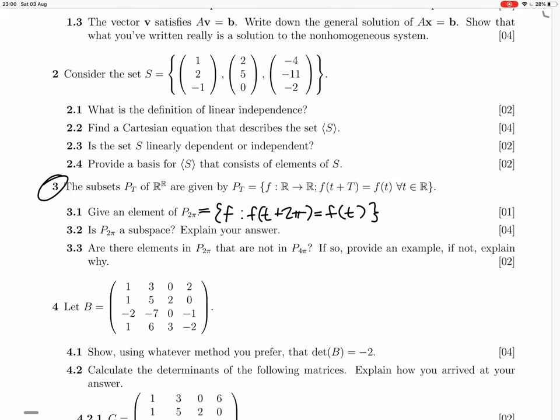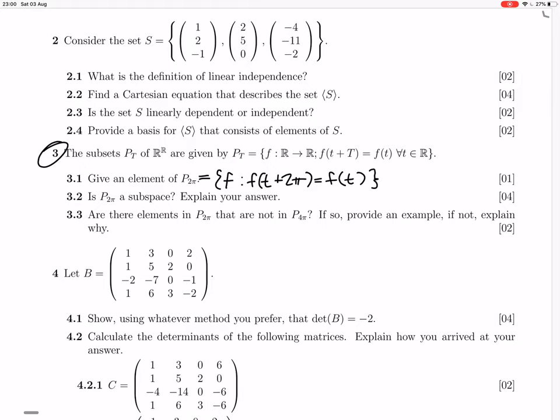Is P2π a subspace? If you add functions that are 2π periodic to each other, do you get another function 2π periodic? Yes. So we've got to prove it's closed under linear combinations. It is going to be closed under linear combinations, and it also has a zero vector in it, which of course it does. The zero function is 2π periodic.